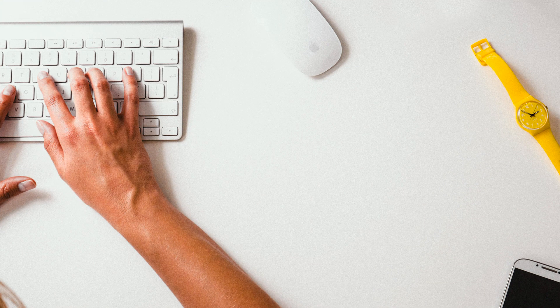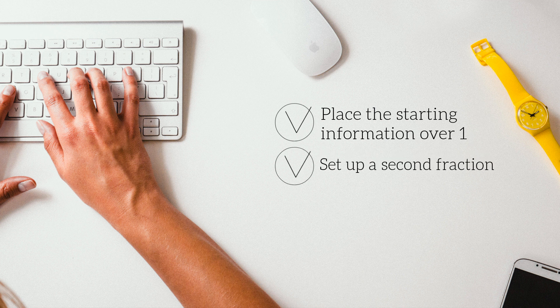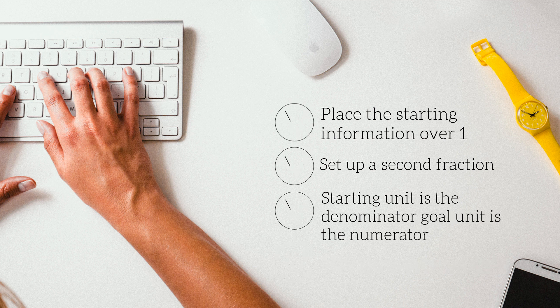Here are a couple of steps you can follow to make unit conversions easier. First, place the starting information over 1. Set up a second fraction with the unit you want to convert to as the numerator and the starting unit as the denominator. Multiply these fractions and cancel units.